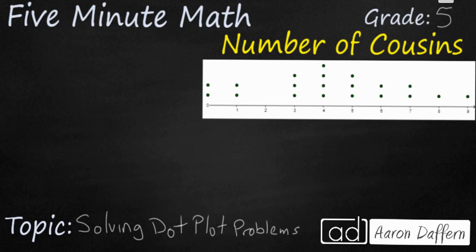So you see on the screen we have an example of a dot plot. There were 20 students in the class and they each answer this question, how many cousins do you have? And we have some students with zero cousins all the way up to one student with nine cousins.